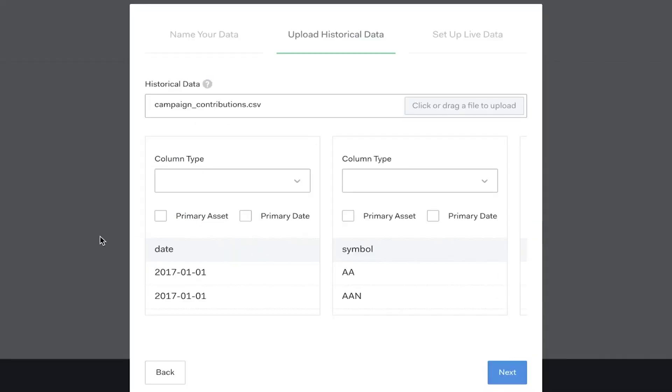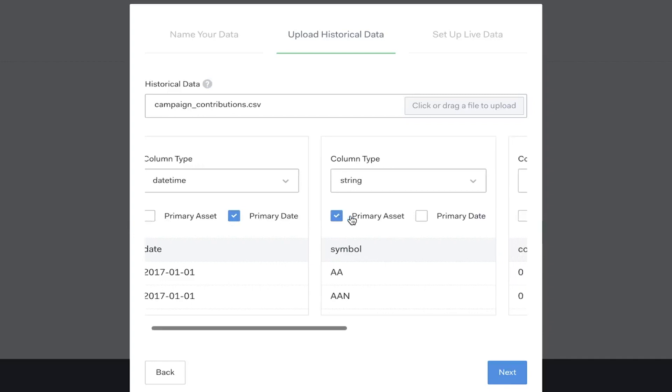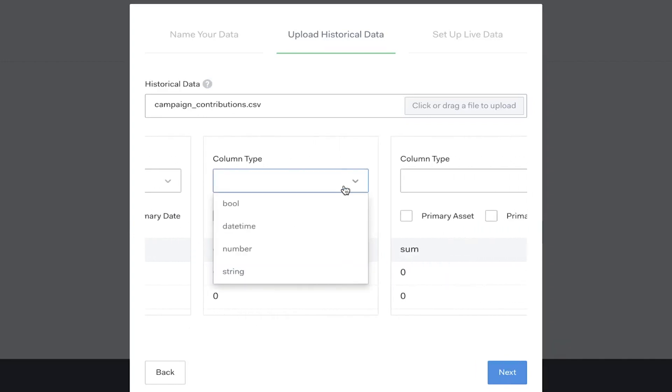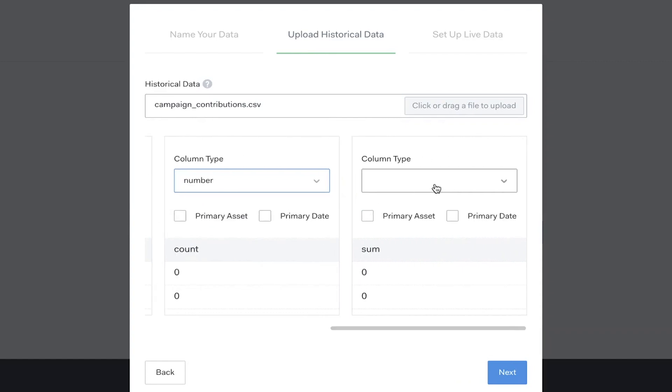Next, I'll upload my data from a local folder. You will then be prompted to define some data in your file with data types. This is needed so that pipeline can properly interact with the data. We'll define the primary date and primary asset fields and declare the data types of the other fields. For this example, we'll set date as the primary date column and symbol as the primary symbol column and count and sum as numbers.